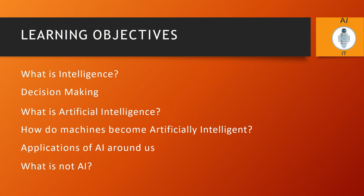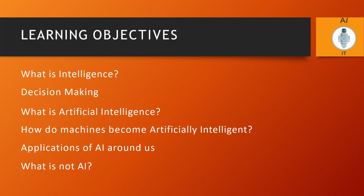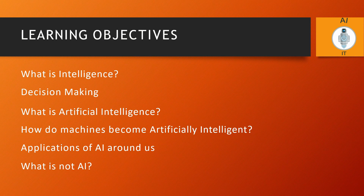In this session, let us learn what is intelligence, decision making, what is artificial intelligence, how do machines become artificially intelligent, the applications of AI around us, and what is not AI.